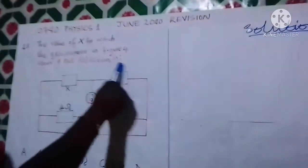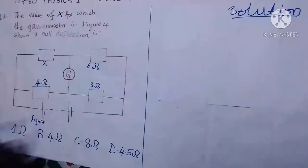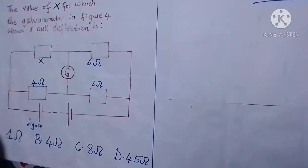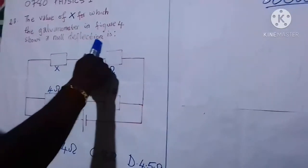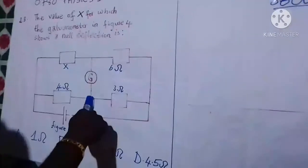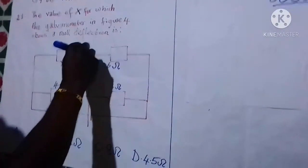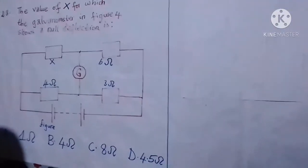This type of circuit is called the Wheatstone bridge circuit, and if the galvanometer shows a null deflection, then these two points are at the same potential. This point and this point, they are at the same potential.